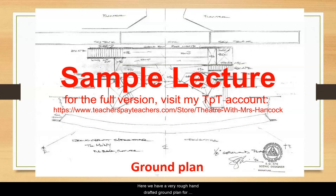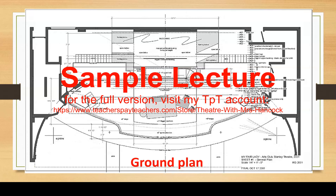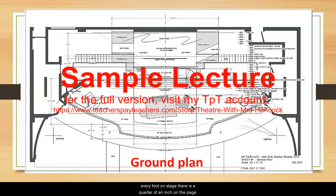Here we have a very rough hand-drafted ground plan for Jesus Christ Superstar. Note the stamp at the bottom right — this is created by a scenic designer that belongs to the United Scenic Artists Union. This is another example of a ground plan, this time for My Fair Lady. This ground plan is in quarter-inch scale, meaning that for every foot on stage there is a quarter of an inch on the page, so one inch on the page equals four feet in real life. A scale as small as this is necessary to fit a large theater onto a reasonably sized sheet of paper.